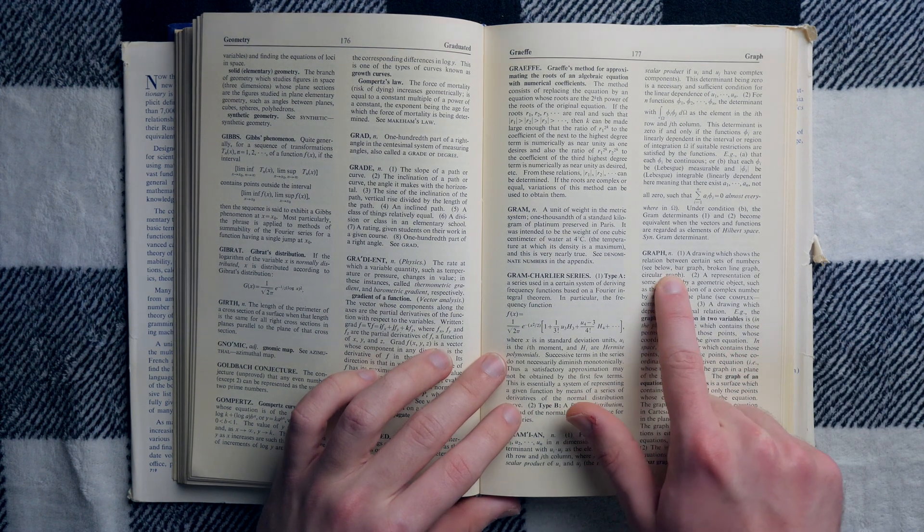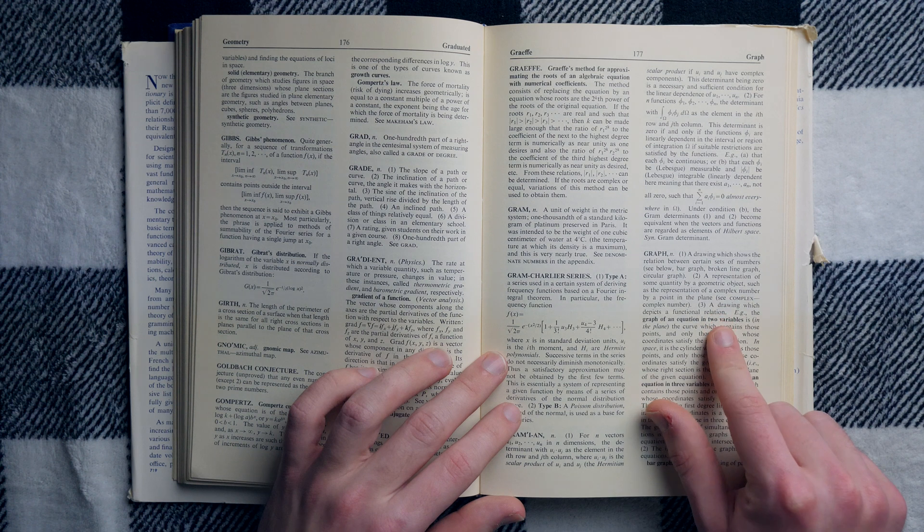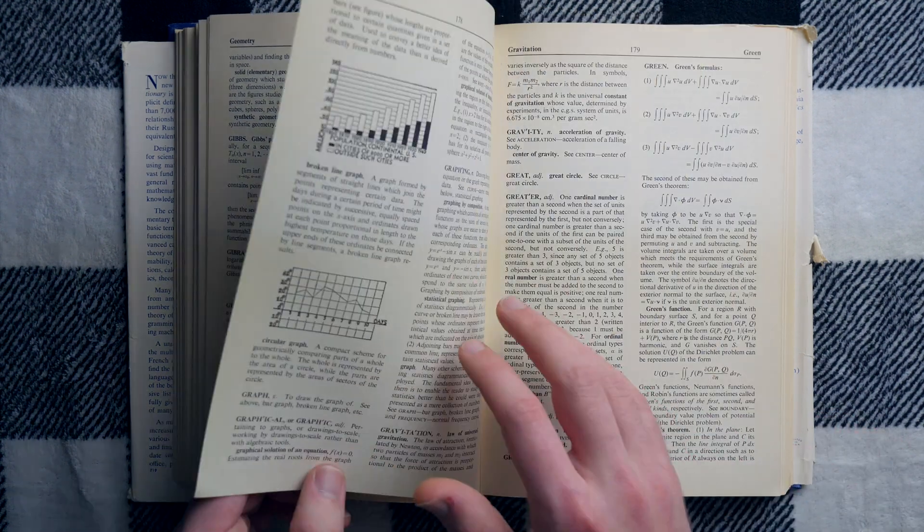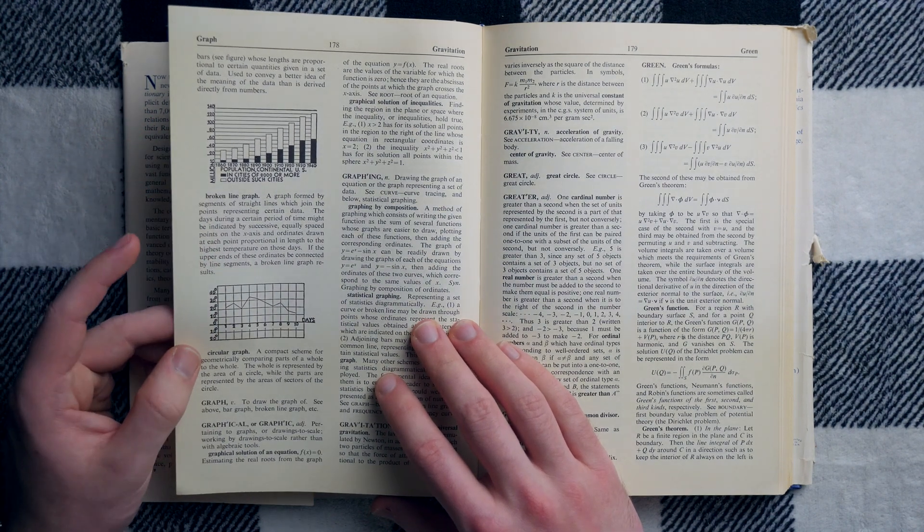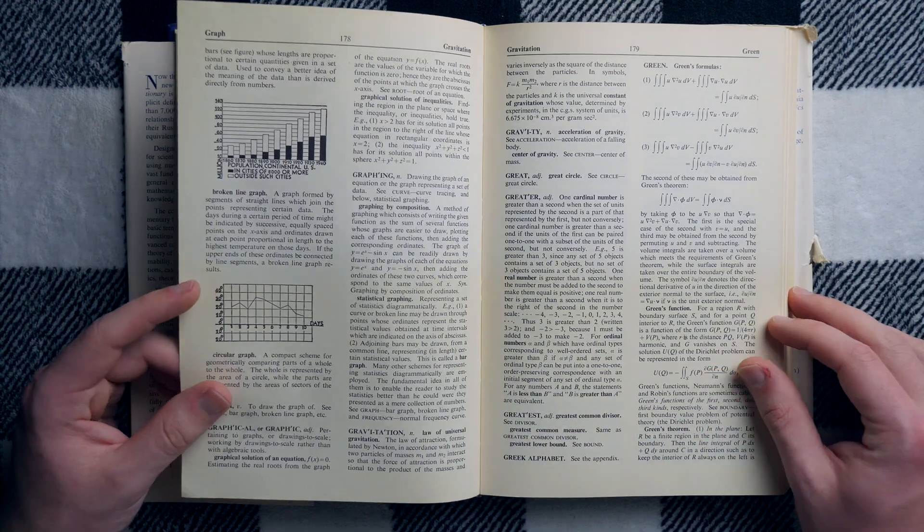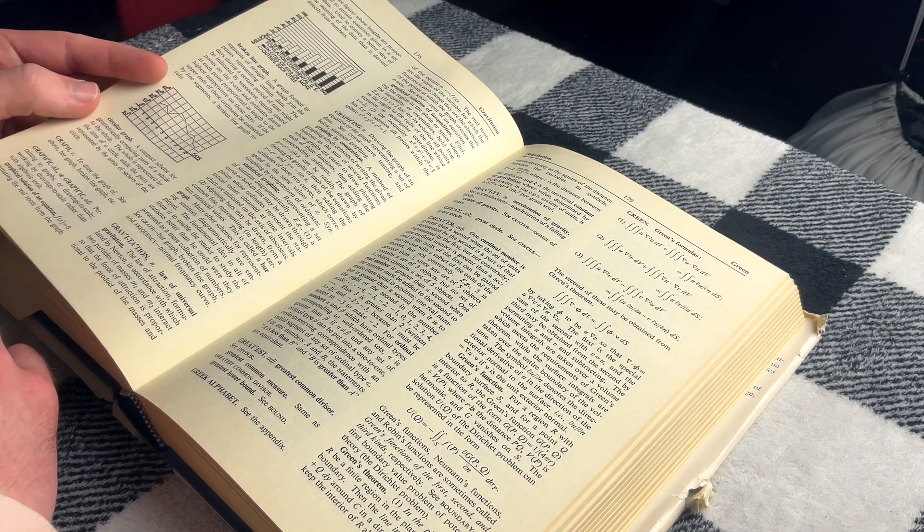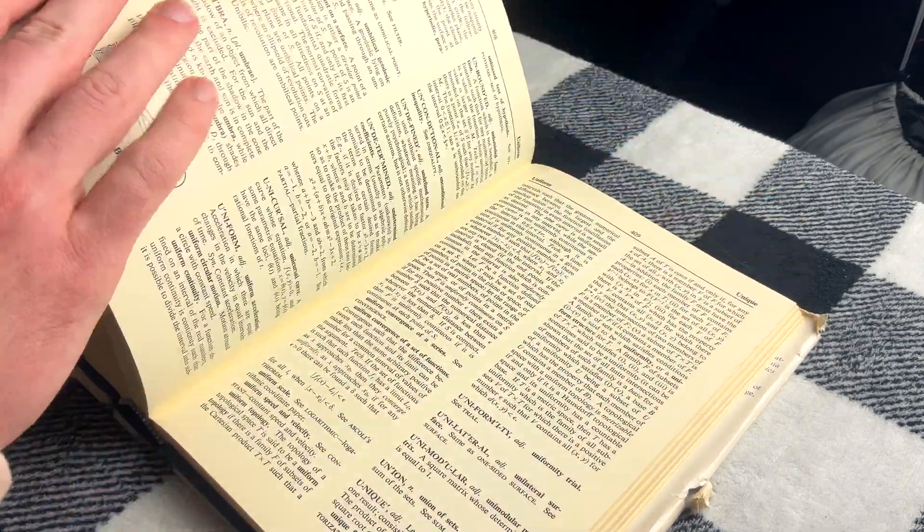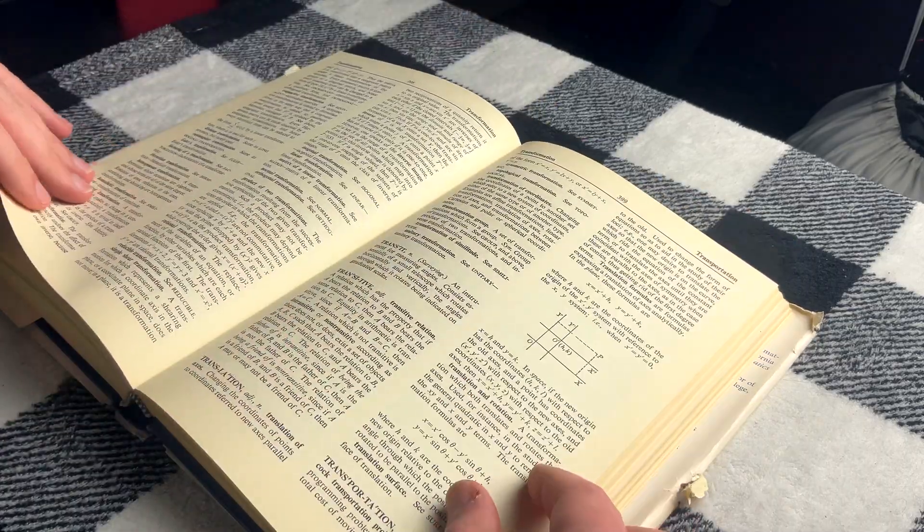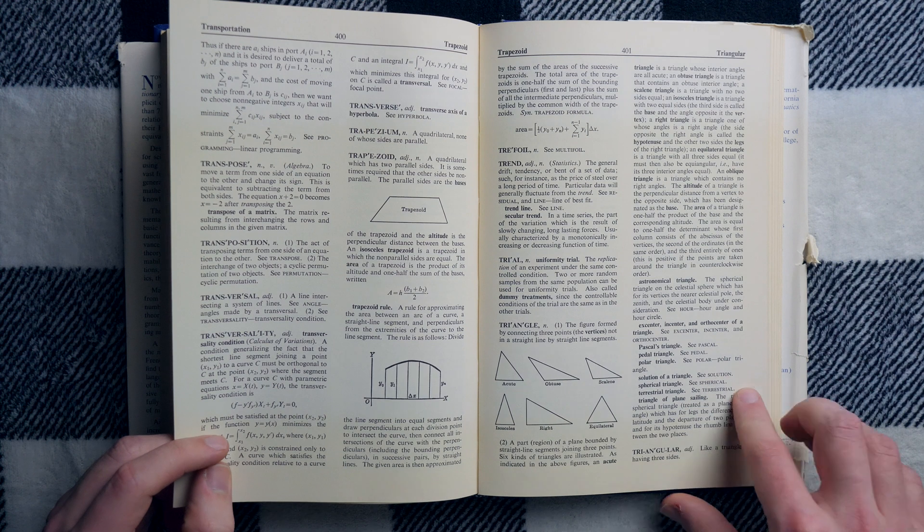Obviously, I'm a big graph guy. We've got the definition of graph here. A drawing which shows the relation between certain sets of numbers. A representation of some quantity by a geometric object. I'm looking for vertex and edges. A drawing which depicts a functional relation. Bar graph. Broken line graph. Circular graph. Many other schemes. Statistical graphing. Does it not have, like, vertices, nodes and lines graph? I don't think it does. I could just be missing it, but I don't see a graph theory graph. So that makes me curious. What does it say about trees? If we go to the T section, does it say anything about trees, which are connected graphs with no cycles? No trees, huh? So I guess there's no graph theory content in here. Interesting.